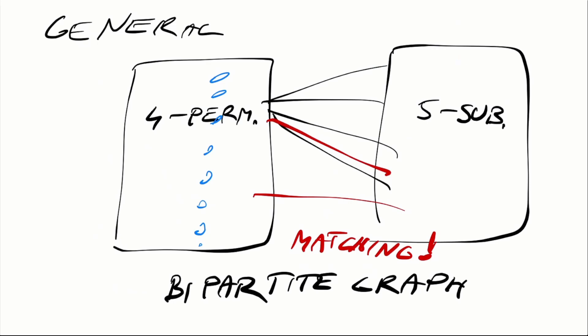And now what we are looking for is that any strategy for the magician can actually be represented by a matching between these two partitions. So to as many of the four permutations we want to assign different five subsets. And of course the edges between the left and right partition correspond to only valid choices.